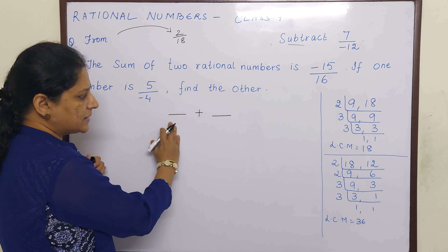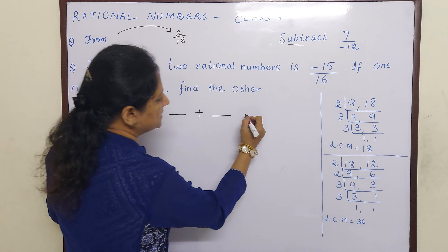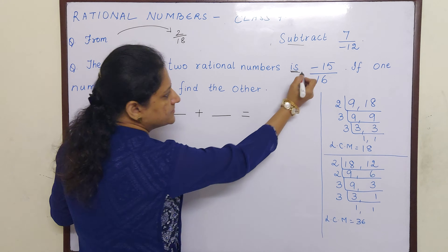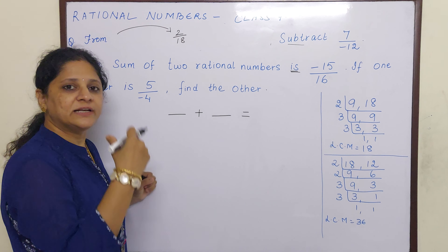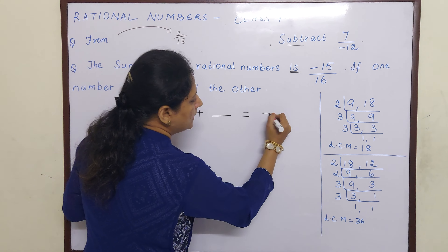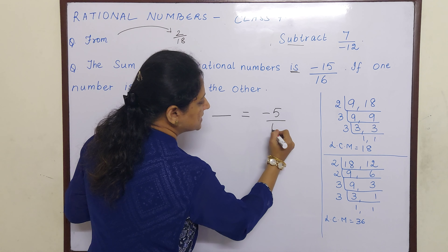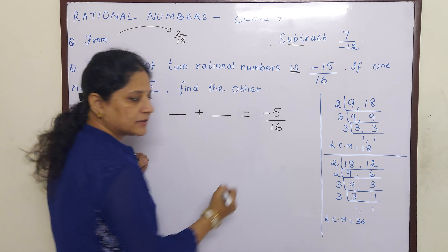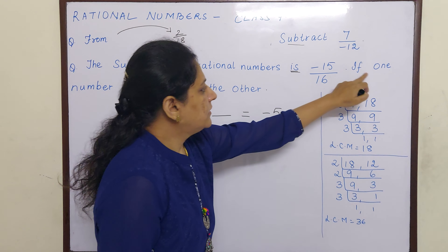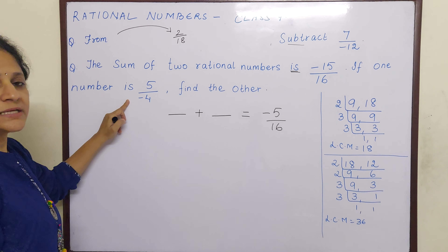Hello children, today we are going to do word problems on rational numbers. Let us start. From the sum of 4 by 9 and minus 6 by 18, subtract 7 by minus 12.